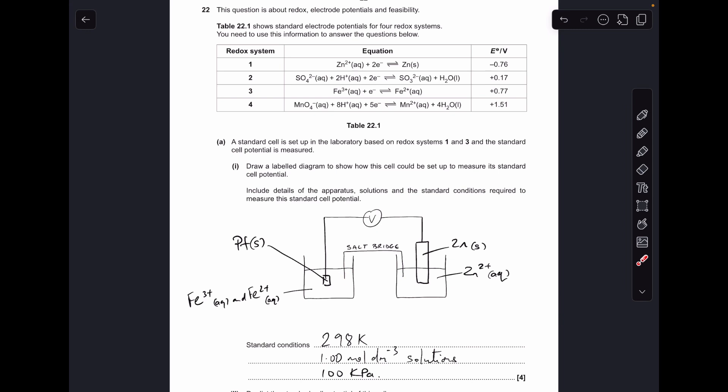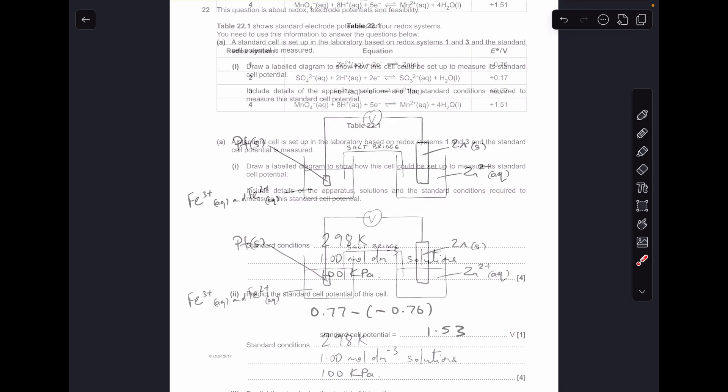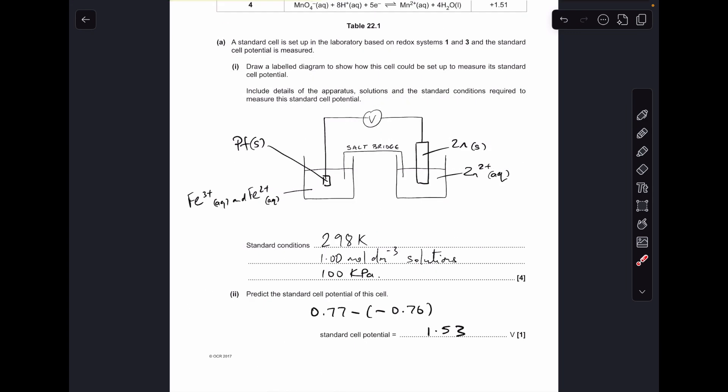Standard conditions, 298 Kelvin, 1 mol per decimeter cubed for your solutions, and 100 kilopascals of pressure. To work out the standard cell potential, we just take the most positive standard electrode potential, and subtract from that the least positive. So it's coming out at 1.53 volts.